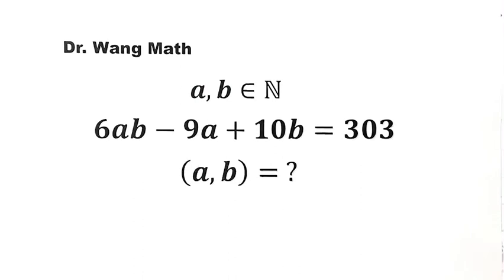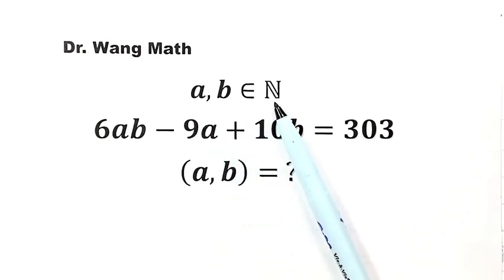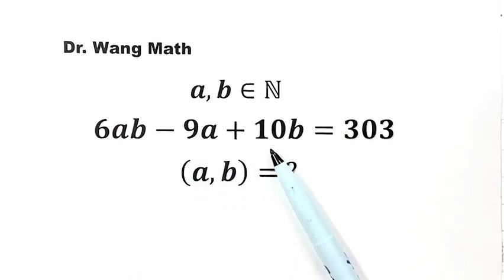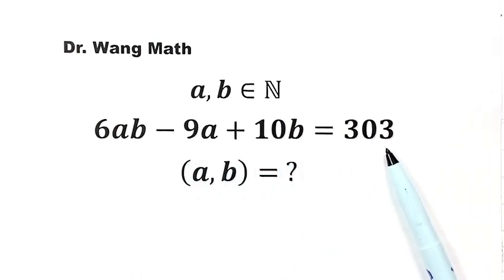In this video, we will solve a question from the Chinese Math Olympiad. A and B are positive integers. Given the equation 6ab minus 9a plus 10b equals 303, solve the equation for a and b. Let's get started.